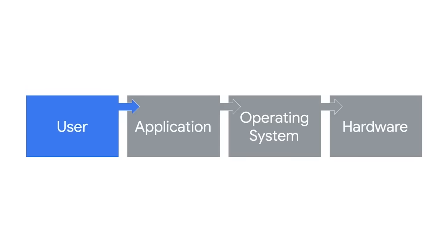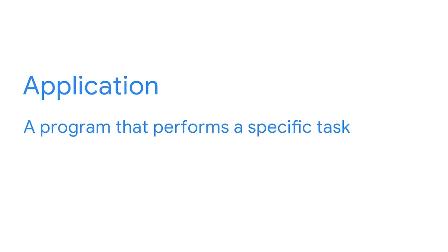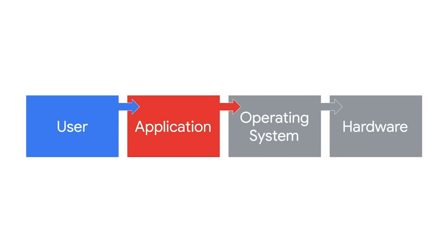Now let's look at how users communicate with the system to complete a task. The process starts with you, the user. To complete tasks, you use applications on your computer. An application is a program that performs a specific task. When you do this, the application sends your request to the operating system. From there, the operating system interprets this request and directs it to the appropriate component of the computer's hardware. The hardware will also send information back to the operating system, which in turn is sent back to the application.